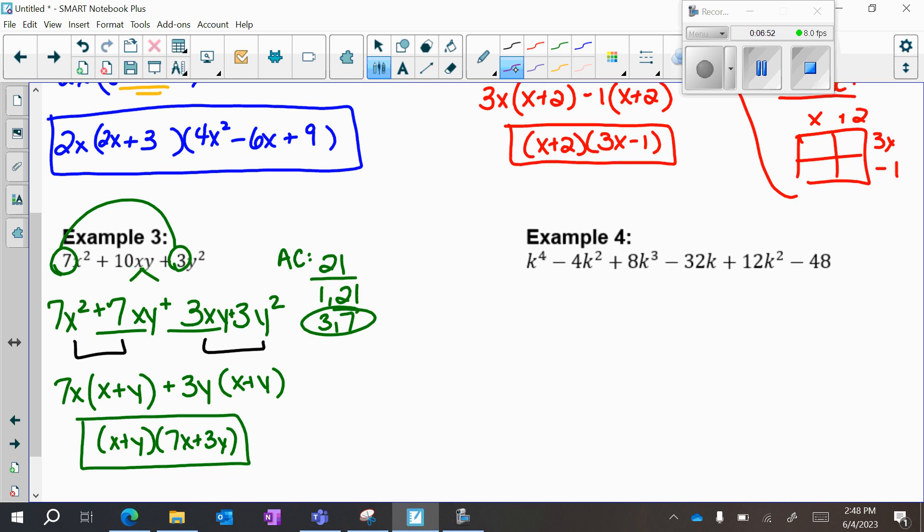I like to start two at a time, if that doesn't work, then I try three at a time, then I try rearranging. So if I start two at a time, my GCF here is k squared. When I take out that GCF, I'm left with k squared minus 4. In my next two pieces, my GCF is 8k. So if I take out a GCF of 8k, I'm left with k squared minus 4, and it looks like I'm on the right track, because my binomials match.